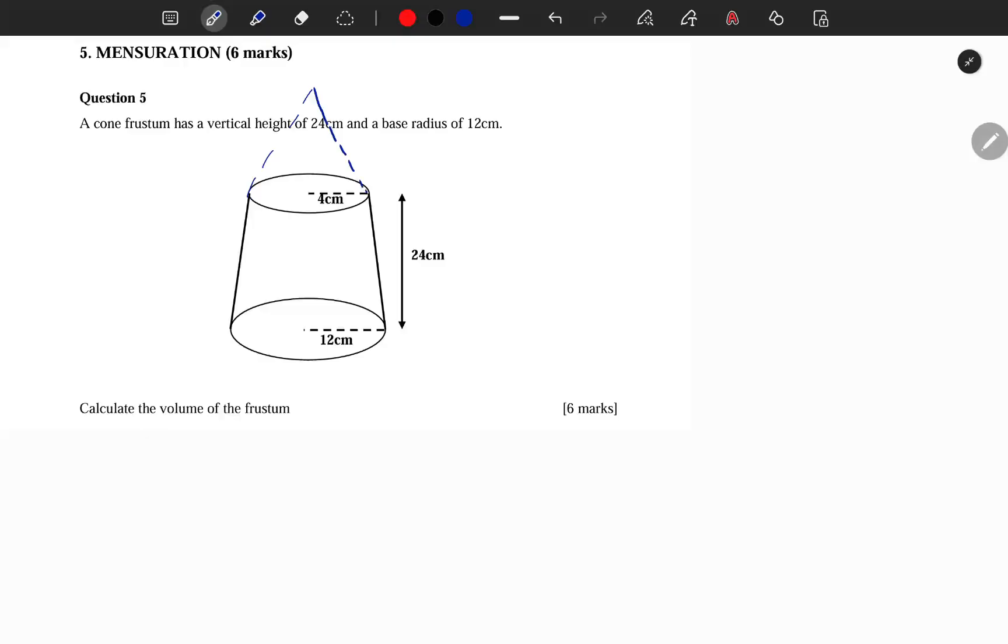Making a complete cone, right? Same thing also with the height - extend it because we don't know that height. Call it x. This height is 24, the radius is 12 for the base, and the radius for the top part is 4 cm.